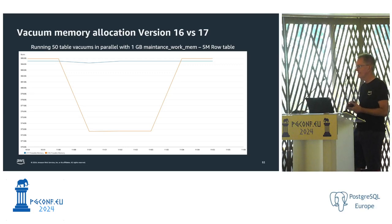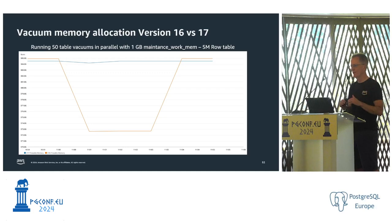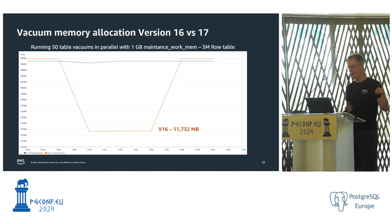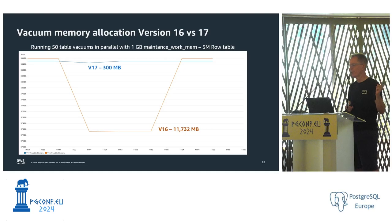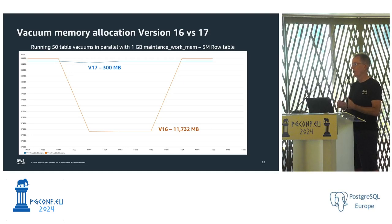Version 17 also changes how memory is allocated for vacuum. Running 50 parallel table vacuums on a 5 million row table with 10% of rows updated, with maintenance work mem set to 1 gig: version 16 allocated almost 12 gig of RAM; version 17 used only 300 meg. Version 17 now incrementally allocates memory as it needs it, so it's safer to set a larger maintenance work mem because if it doesn't need it, it won't make big allocations. This means you can more safely set maintenance work mem to a larger number, enabling fewer passes and more efficient vacuuming.